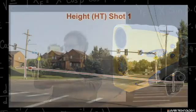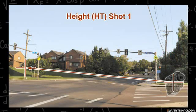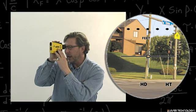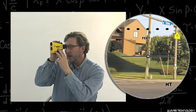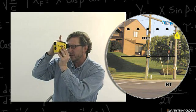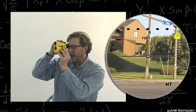When you shoot your first shot, you want to keep it fairly level to your target. In the screen, you will see HT on the right-hand side and HD flashing. That's asking you to take a horizontal distance measurement. You hit the fire button.